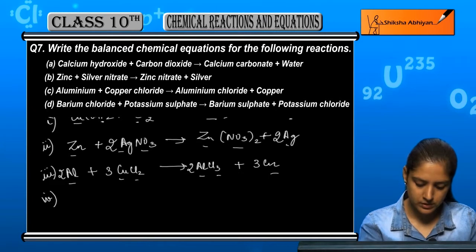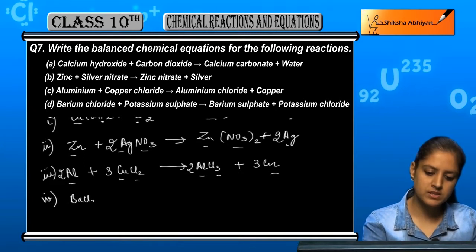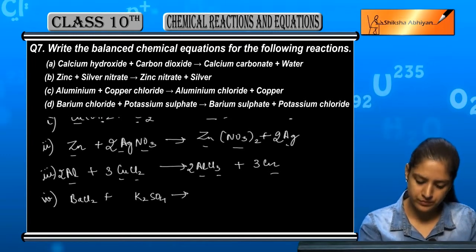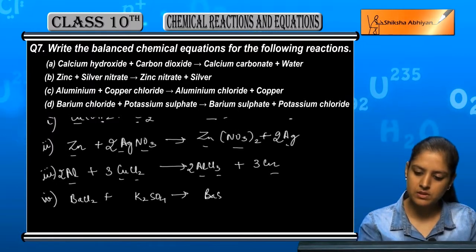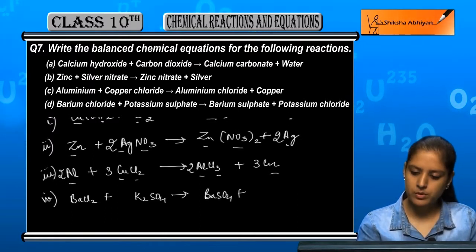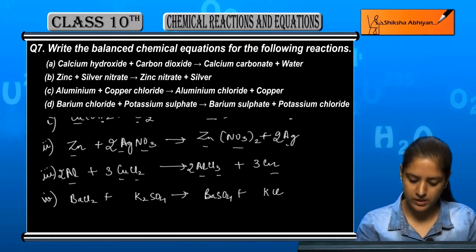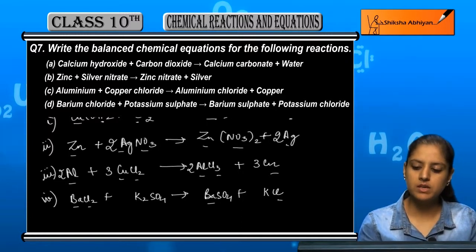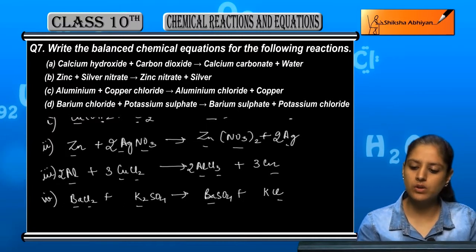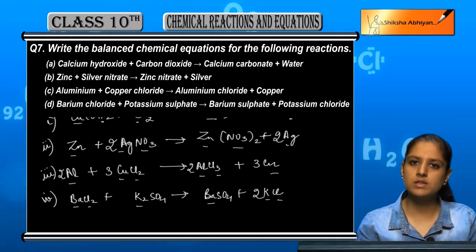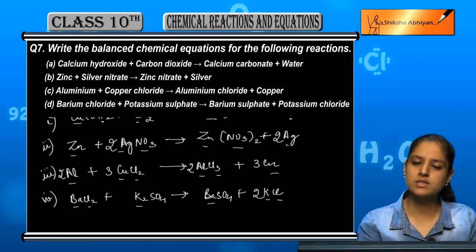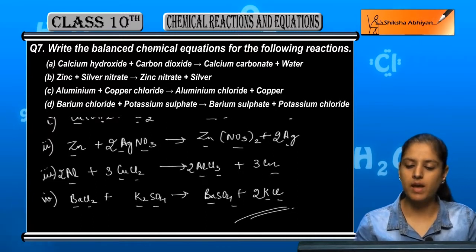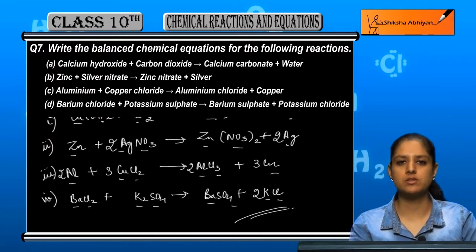Last reaction: barium chloride BaCl₂ plus potassium sulphate K₂SO₄ gives barium sulphate BaSO₄ plus potassium chloride KCl. Ba is the same on each side. Cl is 2 on the left but 1 on the right. K is 2 on the left but 1 on the right. Multiplying KCl by 2 makes K equal to 2 and Cl equal to 2. SO₄ is equal on both sides. So it is balanced. These are all the balanced equations for the given chemical reactions.